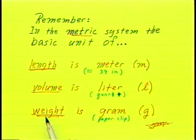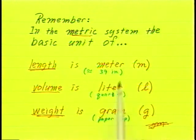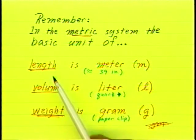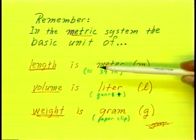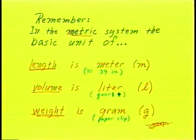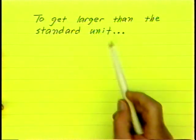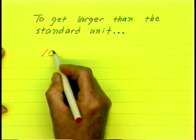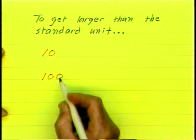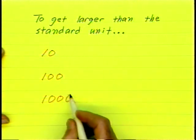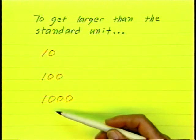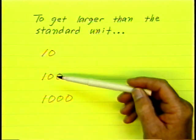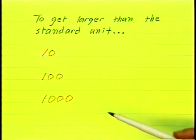So these are the 3 main new units of measure one has to learn — just one for each, whereas in English there is a multiplicity of units for length, volume, and weight. To get more or less of 1 meter, we need to memorize a short table. To get larger than the standard unit, you're thinking in units of 10: either 10 of them, 100 of them, or 1,000 of them. If you can remember the prefix for each of these, you're in good shape.